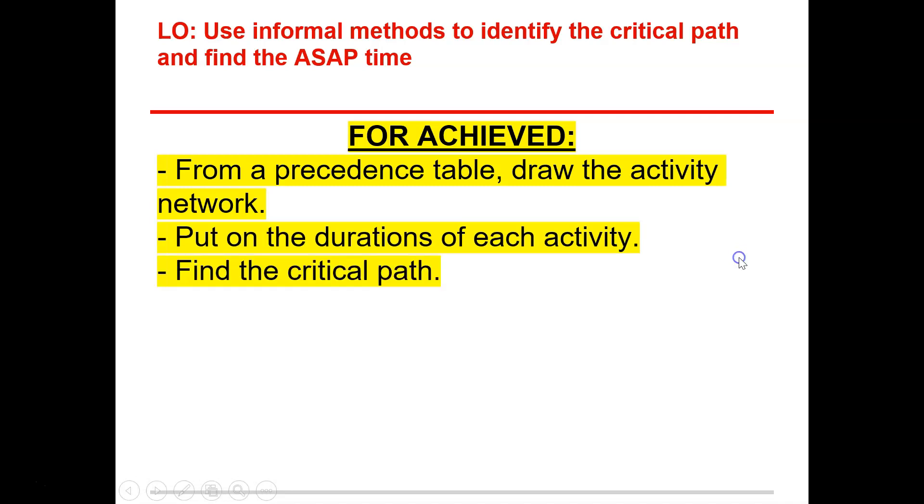So the three things that we need for achieved is from a precedence table draw the activity network, put on the duration of each activity, and find a critical path.